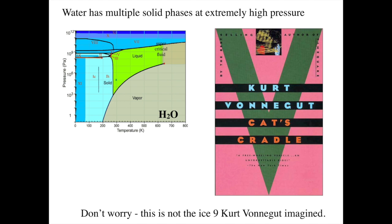So if you happen to have read Kurt Vonnegut, don't worry. Ice 9 is on this phase diagram, but is not the kind in Kurt Vonnegut's novel that was sort of apocalyptic, if you will. If you haven't read it, I won't give it away.